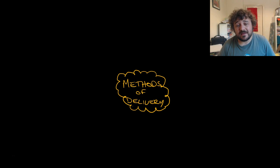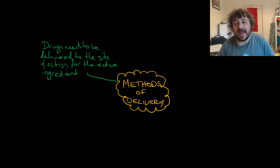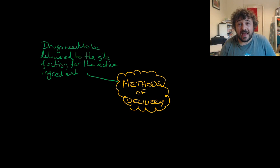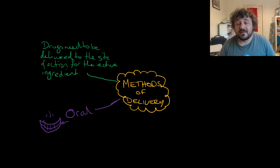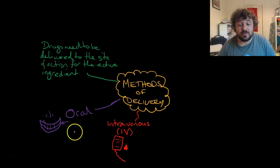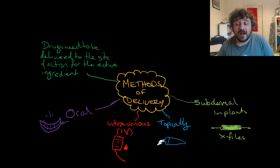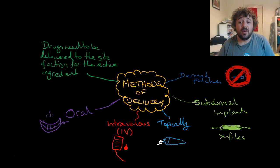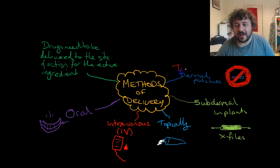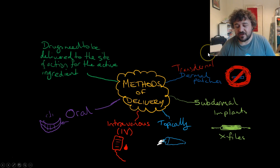So what are the different methods of delivery? They need to get to the active site — the active ingredient needs to get where it has to act and still be in a chemically usable place. You can give drugs orally, intravenously, as a topical cream, or as a subdermal implant or dermal patches. These are also known as transdermal because they go across the dermis — dermis means skin.